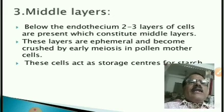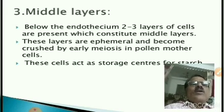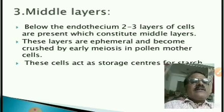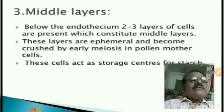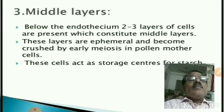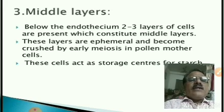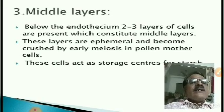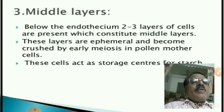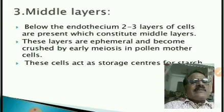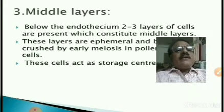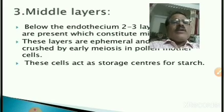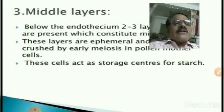The third part is the middle layers. Below the endothecium, two to three layers of cells are present which constitute the middle layers. These layers are ephemeral and become crushed by early masses in pollen mother cells. These cells act as storage centers for starch, so the middle layer is the storage center for starch.